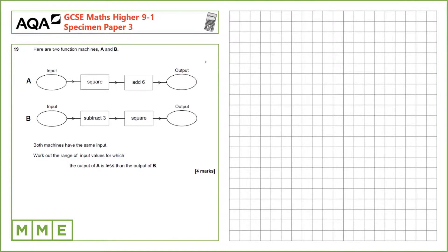Question 19. Here are two function machines, A and B. Both machines have the same input. Work out the range of input values for which the output of A is less than the output of B.